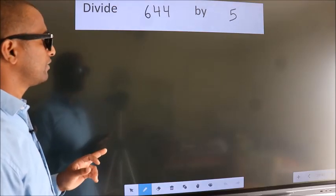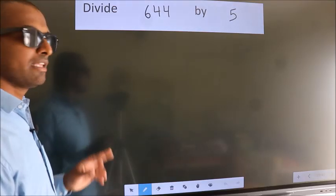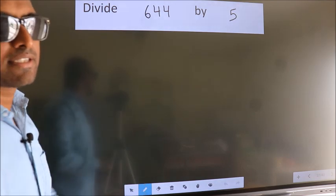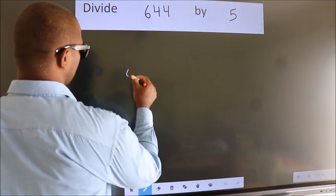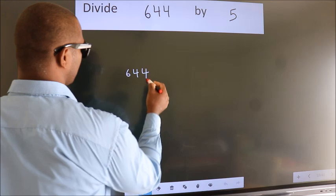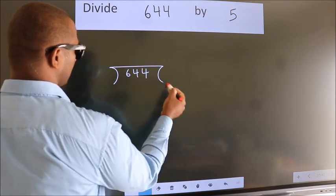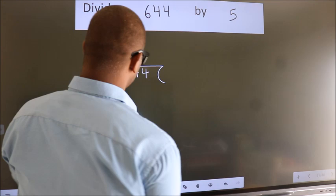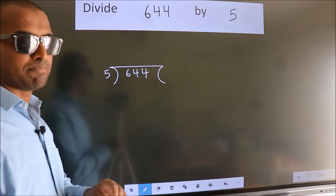Divide 644 by 5. To do this division, we should frame it in this way. 644 here, 5 here. This is your step 1.